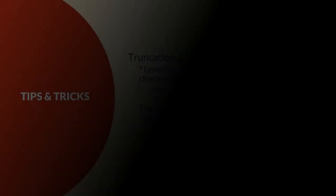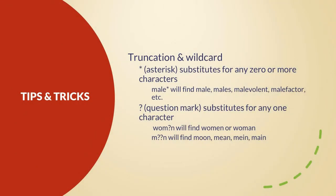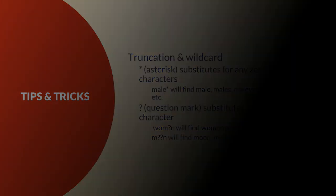There are two wildcards you can use while searching. The asterisk — sometimes called a star — substitutes for zero or more characters. For example, male* will find male, males, malevolent, malefactor, etc. A question mark, on the other hand, substitutes for any one character. WOM?N will return results with women or woman, and M??N will return moon, mean, and main.